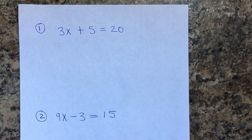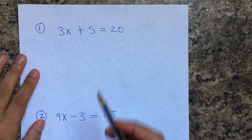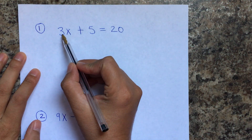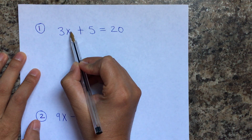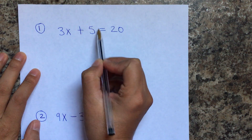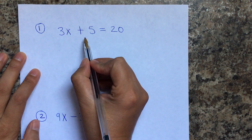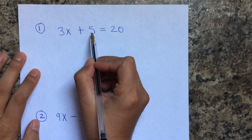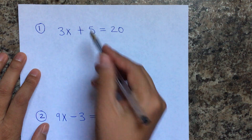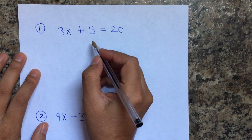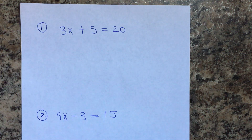Let's start with examples of equations that take two steps to solve. Whenever we have a coefficient and a variable, and also a constant, the first thing we're going to cancel is the constant. Whatever is being added or subtracted — that's the first thing you're going to cancel.